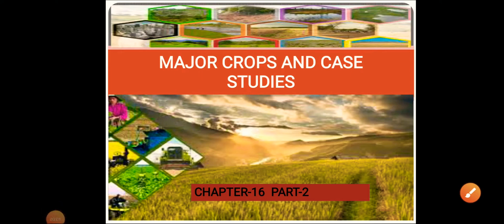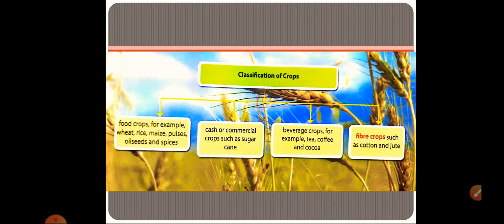Good morning to everyone. This is the second part of the chapter on major crops and case study. Let us review the classification of crops which we have done: food crop, cash crop, beverage crop, and fiber crop. Today, from the viewpoint of examination, we are going to see the geographical conditions required for a particular crop to grow.